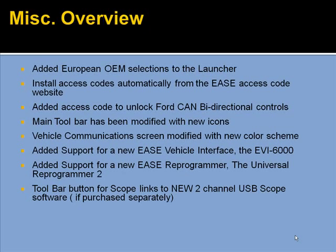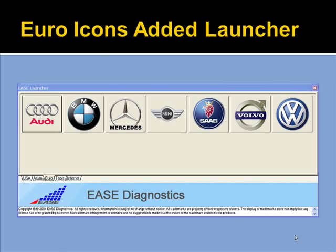For a couple of miscellaneous items, we've always supported generic European vehicles in the scan tool, but now we've added European OEM selections to the launcher to make it easier to separate them and launch the exact car you're looking for. The software will automatically install access codes from our website. We've added a new access code to unlock the Ford bi-directional CAN support, so if you had an older version, you can upgrade to just CAN bi-directional controls on Ford. We changed the look of the scan tool main toolbar with some new icons and changed the color scheme. The European icons have been added just to make it easier to launch — these do only support generic right now, but it should make it easy to get exactly to the car you're looking for.